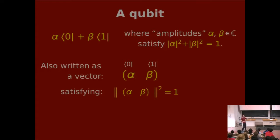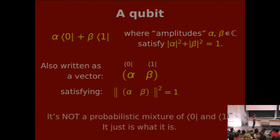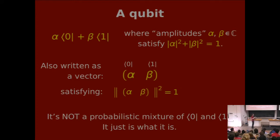So a qubit stands for quantum bit. We can write it in one of two ways: either as a vector whose length squared is 1, or write it in the ket notation. Just one thing I want to say: it's not like some kind of probabilistic mixture of zero and one — it just is what it is, that's the law of nature. A photon state is defined by these two numbers.